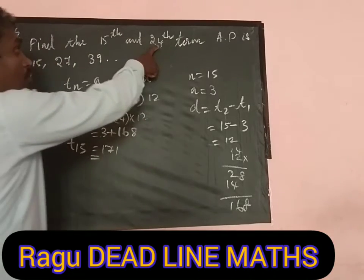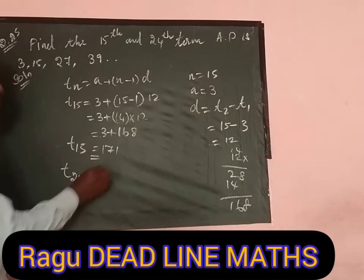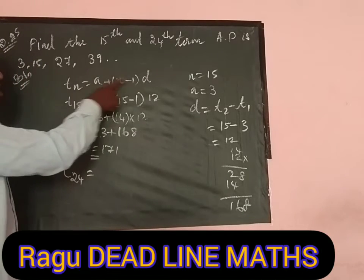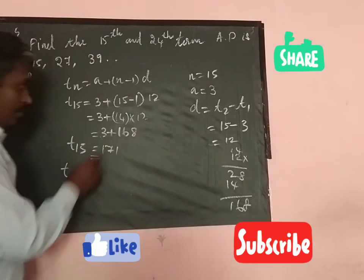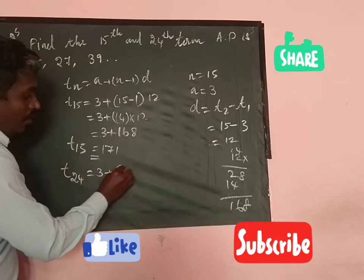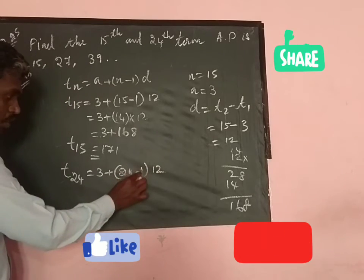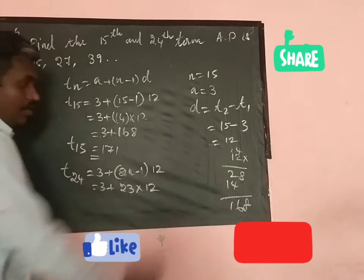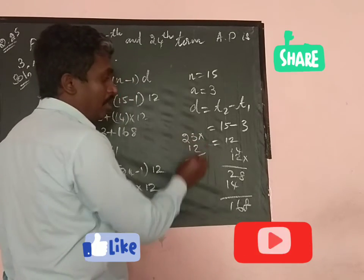In the same way, to find the 24th term: a = 3 and d = 12. Substituting: t24 = 3 + (24 - 1) × 12 = 3 + 23 × 12.